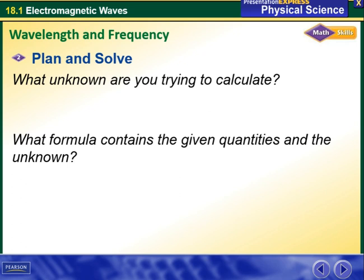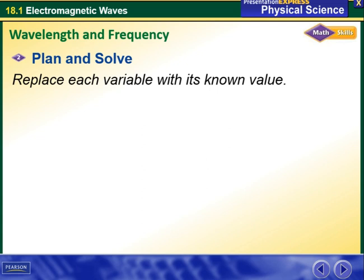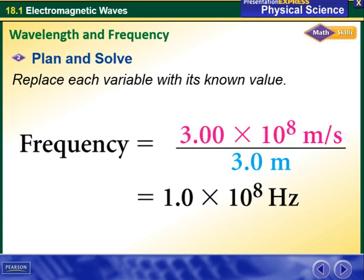The equation is speed equals frequency times wavelength, but in this case I need to find the frequency. So I'm going to make the frequency the subject by dividing the speed over the wavelength. After that, I put them in my calculator and I have a value of 1 times 10 to the power 8 Hertz as the frequency.